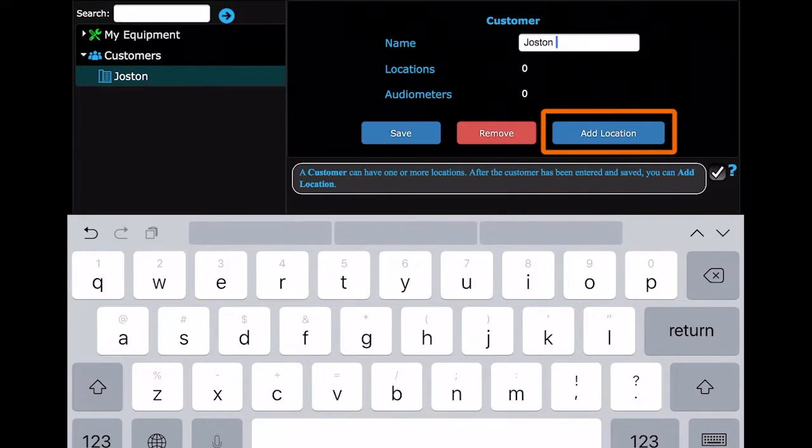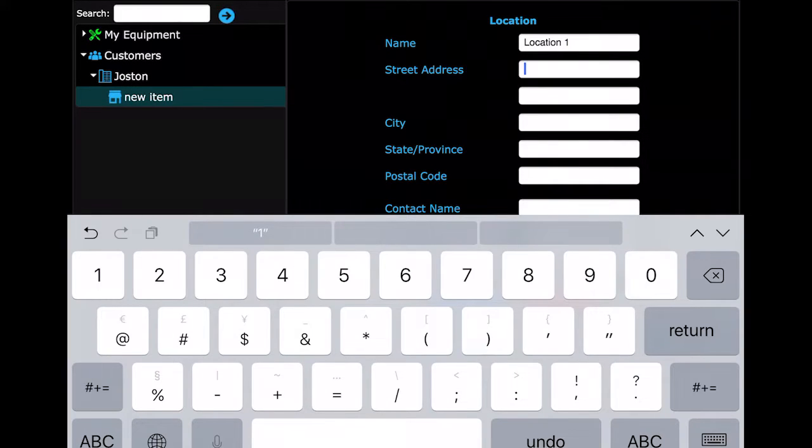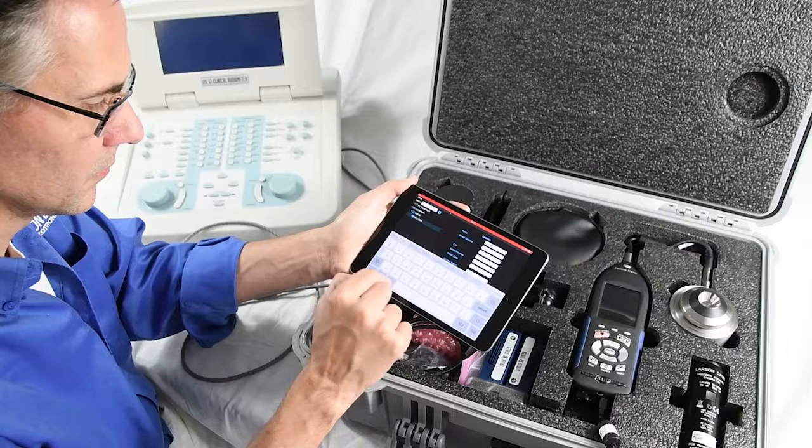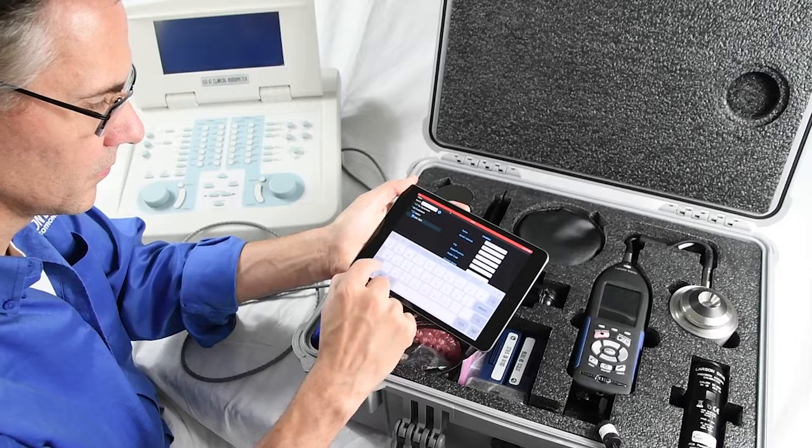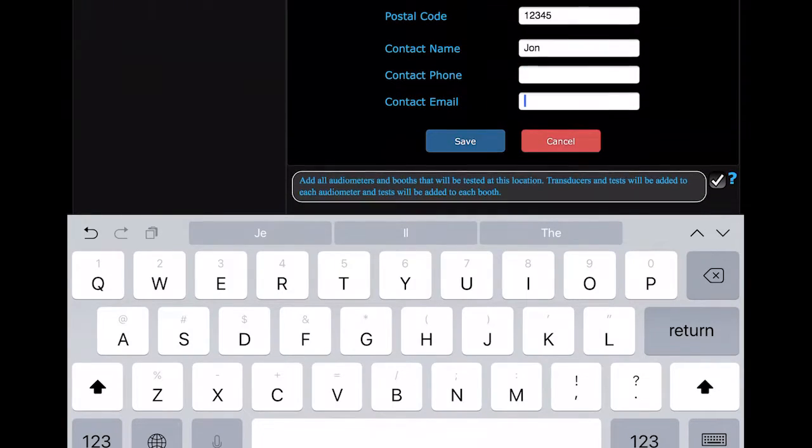Now the button for Add Location appears. Select it and add the location information. This is the location that the audiometer or booth is located, not the mailing address or any other address. Enter contact information for your customer and then Save.